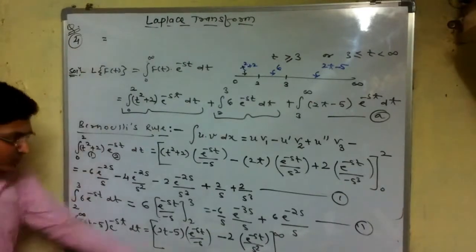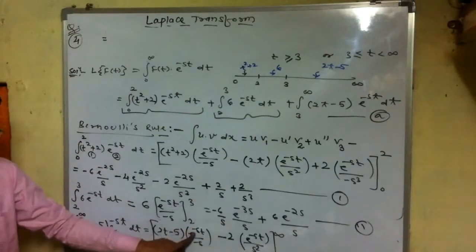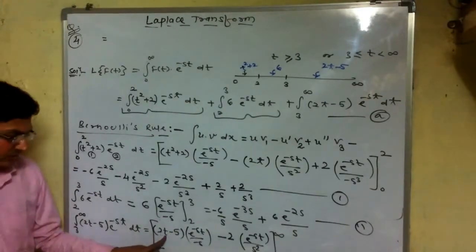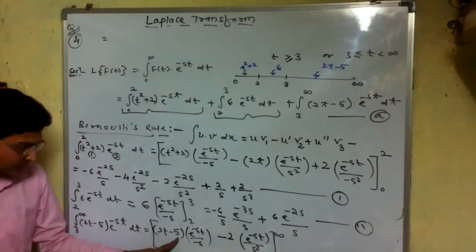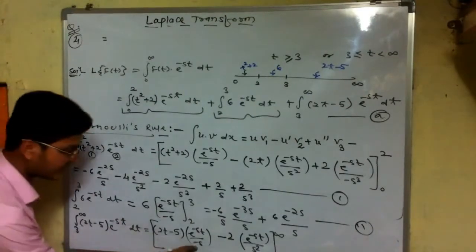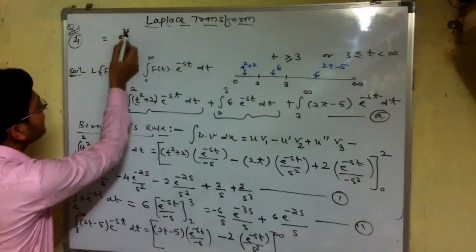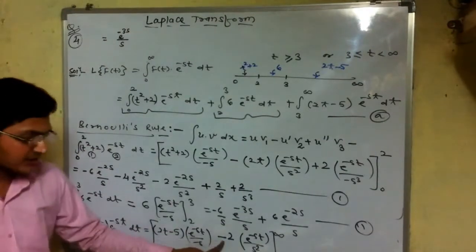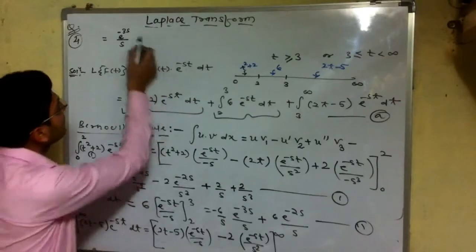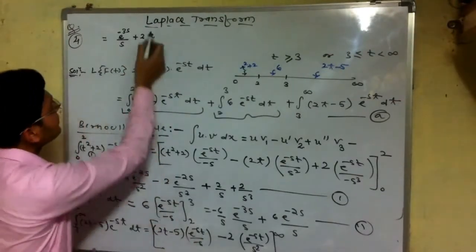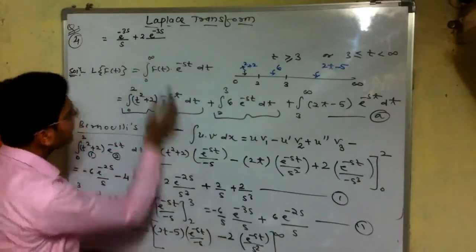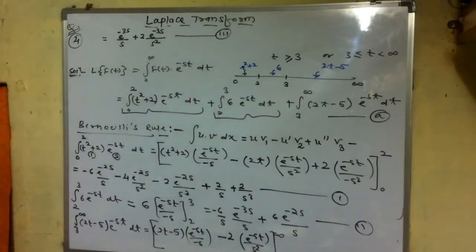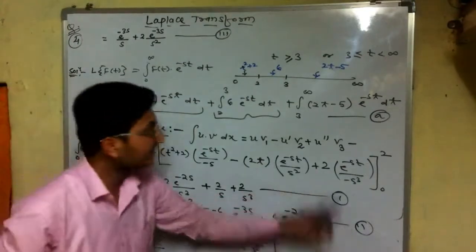Substituting the limits: as t approaches infinity, e to the power minus infinity equals 0, so the upper limit term is 0. Substituting the lower limit t = 3: we get 6 − 5 = 1 at that point. With the minus sign from lower limit substitution, the third integral gives e to the power minus 3s divided by s, plus 2 e to the power minus 3s divided by s². This completes equation three.